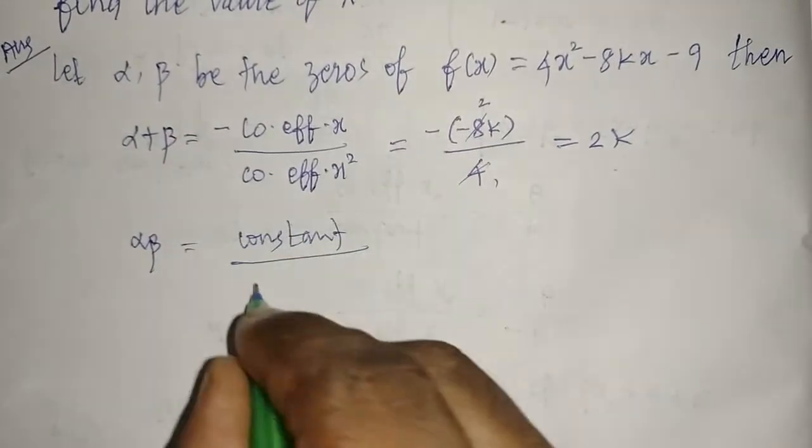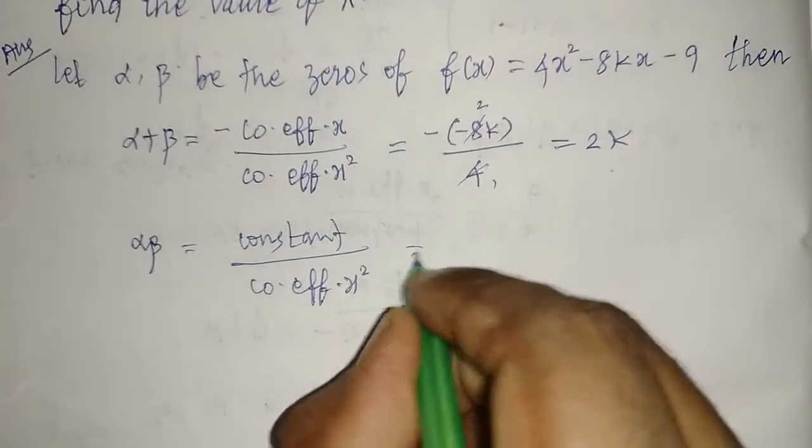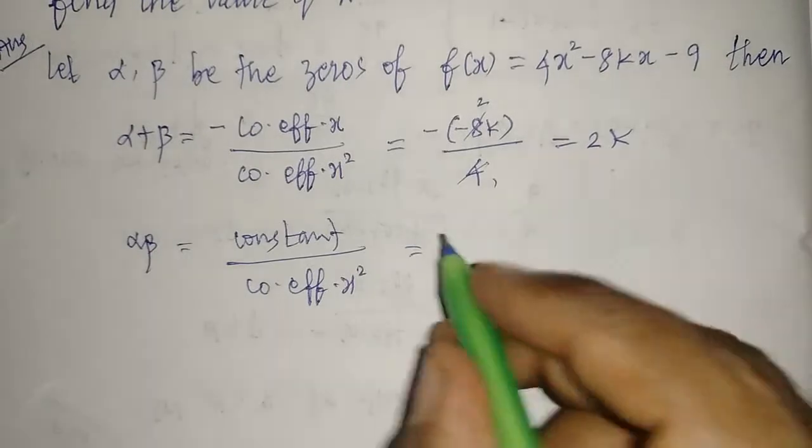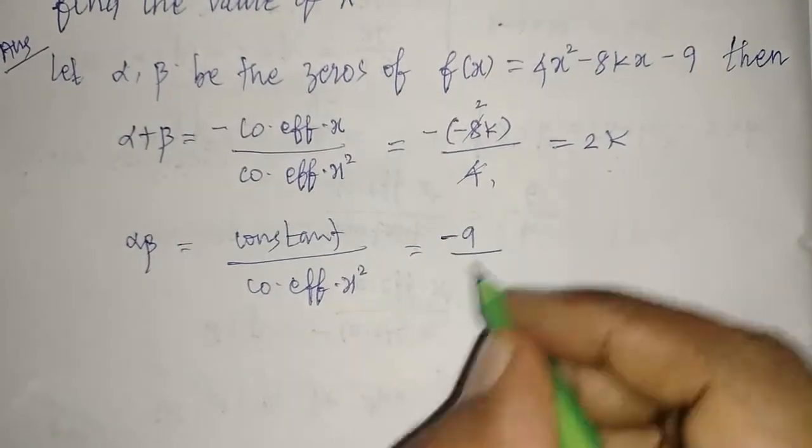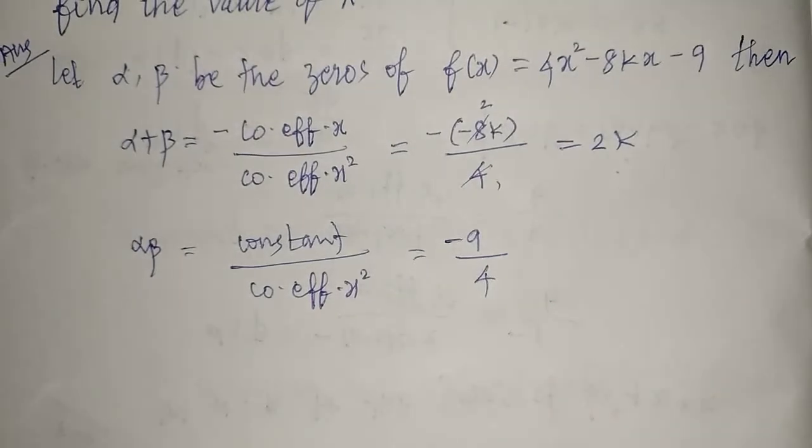Constant term in the quadratic we have is minus 9, divided by coefficient of x square value, which is 4. So we have minus 9/4.